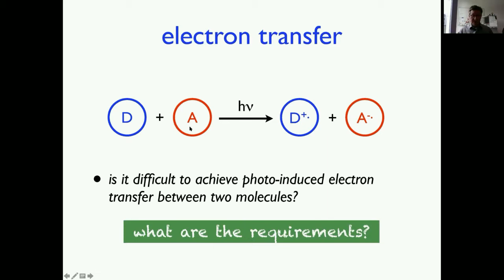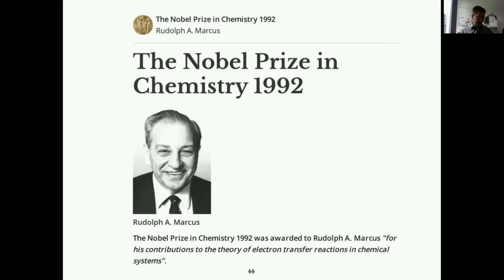We have two species — an electron donor and an electron acceptor, an electron-rich species and an electron-poor species. In principle, with light we can have electron transfer and create the charge-separated state, which consists of the radical cation of the donor and the radical anion of the acceptor. You can wonder when this occurs, whether it is difficult, and what is needed. That is basically all in the theory of electron transfer developed by Marcus.